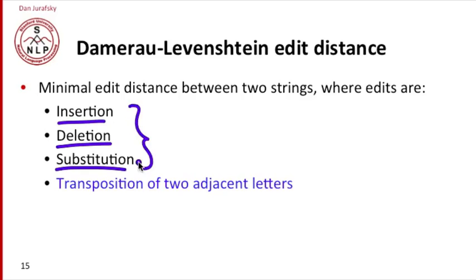For spell correction, we're going to want to add a fourth possible edit operation, transposition, because in practice for spelling errors, we often transpose two letters. That version of edit distance is now called Damerau-Levenshtein edit distance, and it can be computed by various dynamic programming approaches.